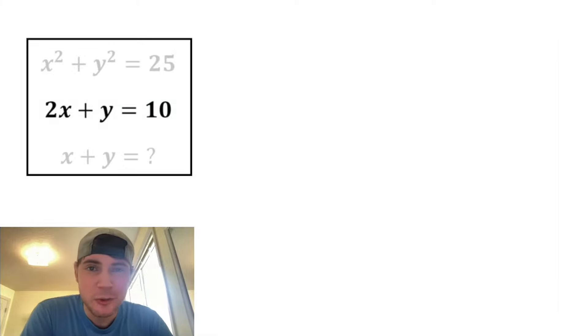So first, let's focus on the 2x plus y equals 10. Let's get the y all by itself. Let's subtract 2x from both sides. On the left-hand side, we just have y, and on the right-hand side, we have 10 minus 2x. And this is important, so let's put a box around it.